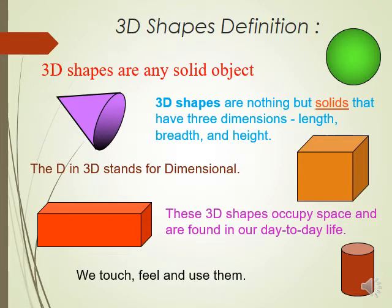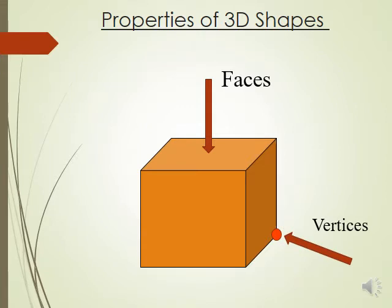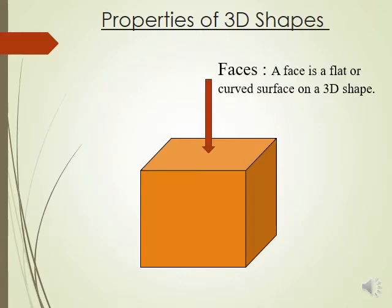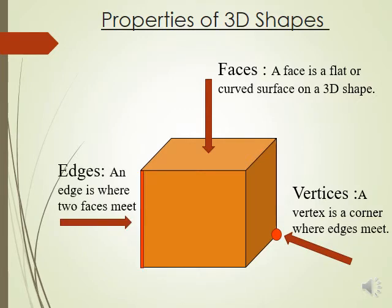We touch, feel, and use them. We're going to look at the properties of 3D shapes. There are three: the first is faces, the second is vertices, and the third is edges. A face is a flat or curved surface on a 3D shape. A vertex is a corner where edges meet. An edge is where two faces meet.